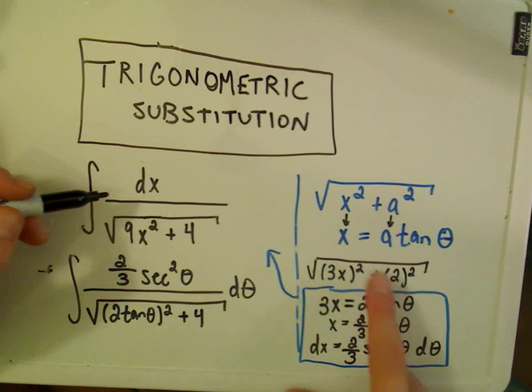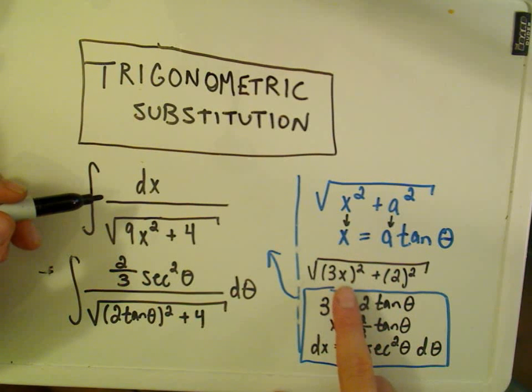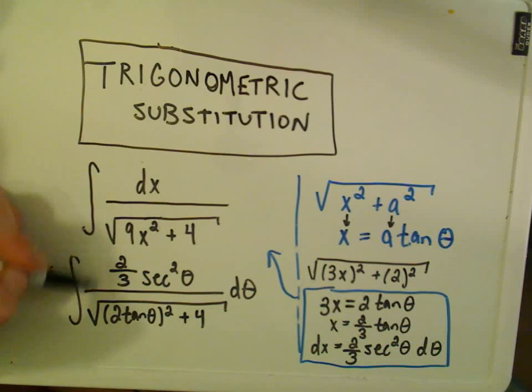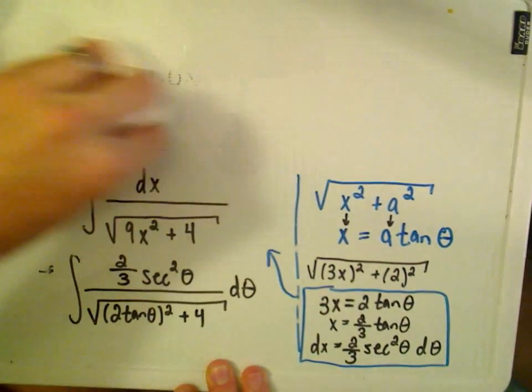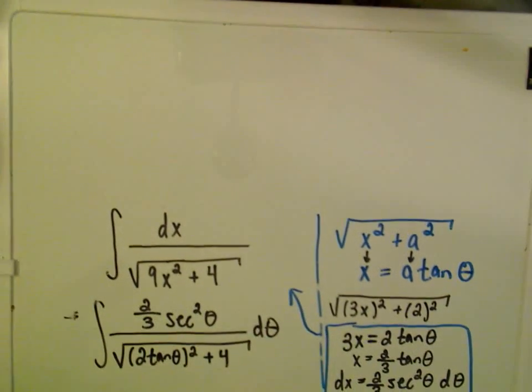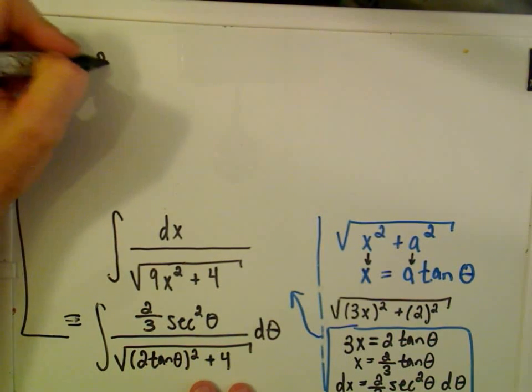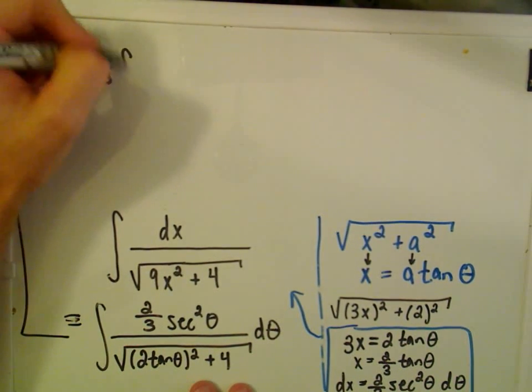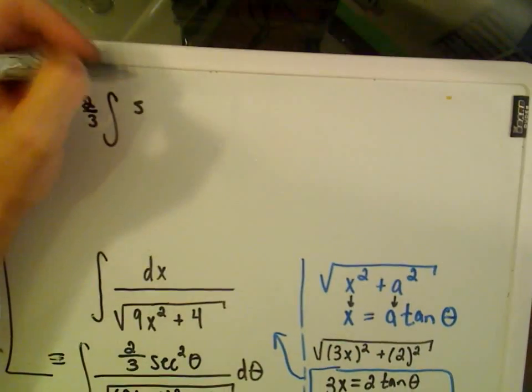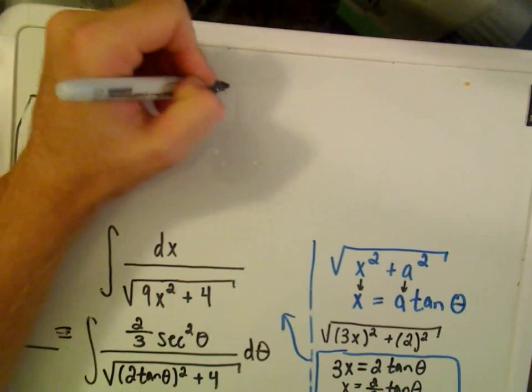So again, I'm picking my substitution, and then basically just calculating your dx from that, and then plugging that into your integral. So at this point, what you have to do is basically just keep simplifying down your integral. So I'm going to move this up to the top. I'm going to pull the 2 thirds out front, and then we have the integral of secant squared theta d theta.